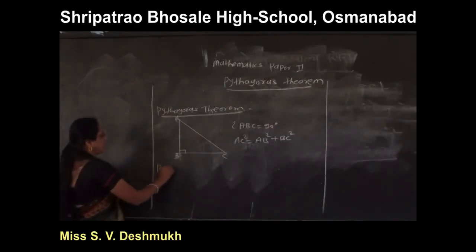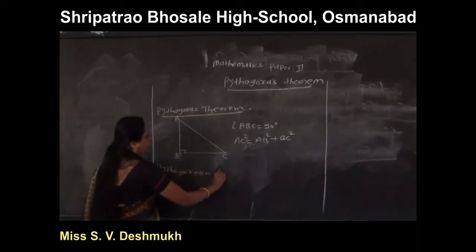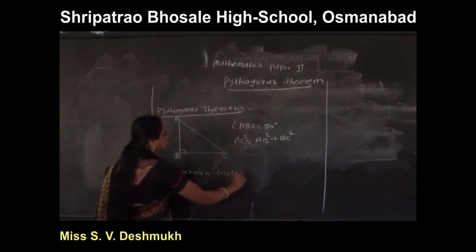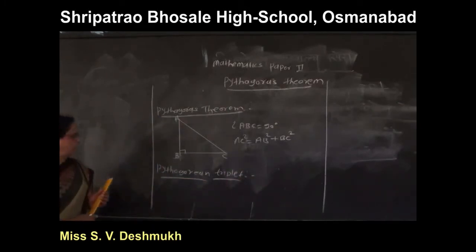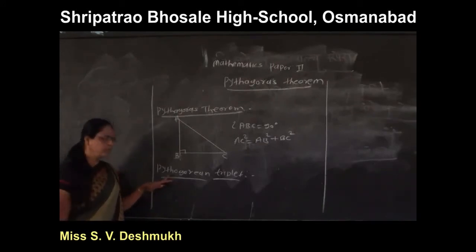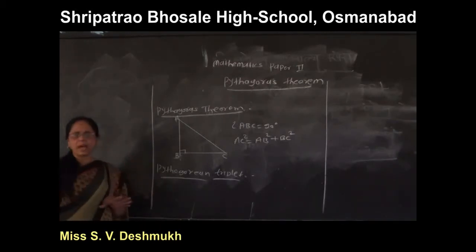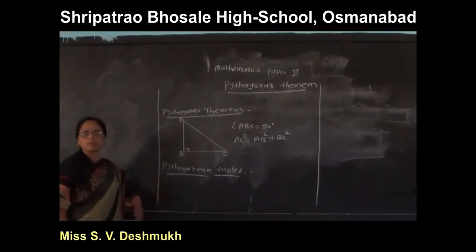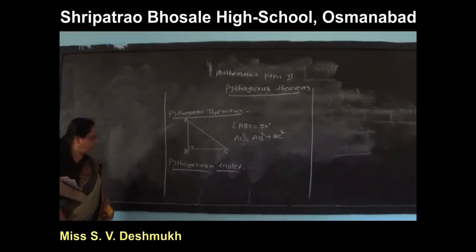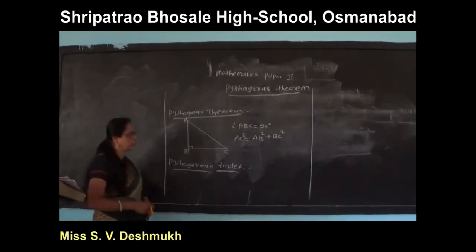A Pythagorean triplet: in a triplet of natural numbers, if the square of the largest number is equal to the sum of squares of the remaining two numbers, then the triplet is called a Pythagorean triplet.